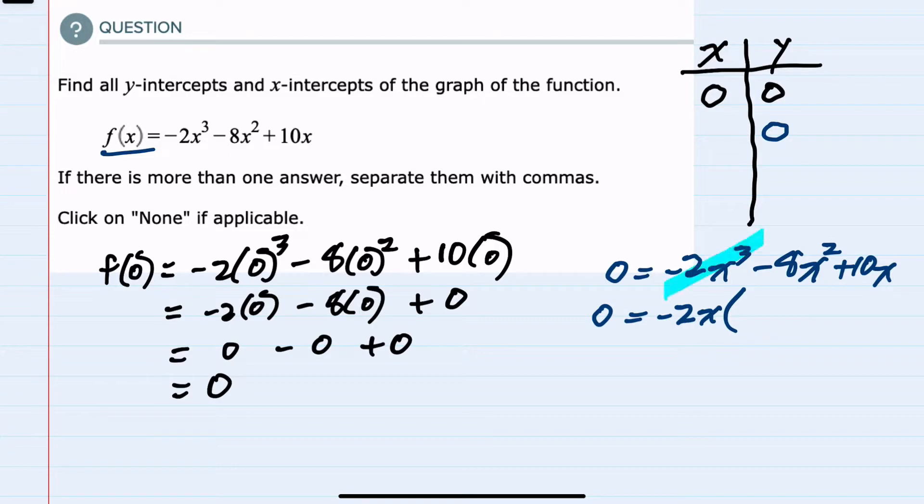In the first term if I factor out negative 2x I'm left with x². In the second term if I factor out negative 2x I'm left with plus 4x. And in the last term if I factor out negative 2x I'm left with minus 5.